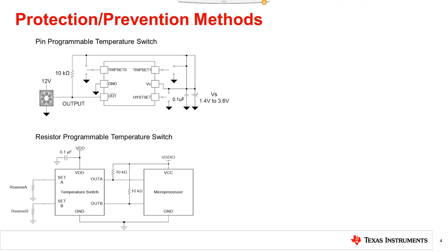With a pin programmable device, there will be one or two digital input pins which in combination when set to either ground or supply will set the chip thresholds. When setting thresholds with the resistor programmable temperature switch, you typically add a resistor to ground from one or both of the inputs.